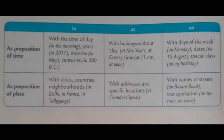Look at this table to understand their use. For prepositions of time — 'in' is used with time of day (in the morning), years (in 2017), months (in May), centuries (in 200 BC). 'At' is used with holidays without a specific day (at New Year's, at Easter) and time (at 11 AM, at noon). 'On' is used with days of the week (on Monday), dates (on 15th August), and special days (on my birthday).